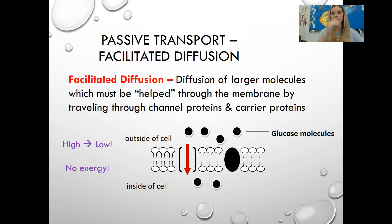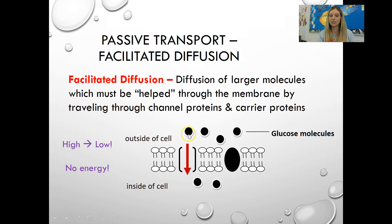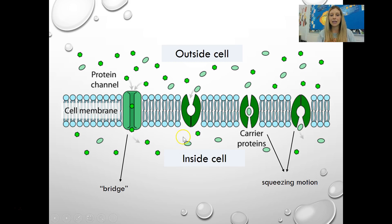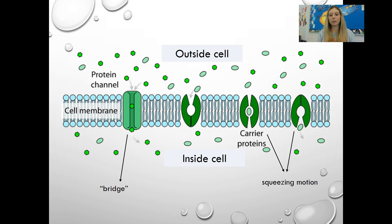Then we have facilitated diffusion, another type of passive transport. It's still diffusion — molecules moving from high to low — but these molecules are a little too large to squeeze through the porous membrane, so they have to be helped or facilitated through the membrane by traveling through channel proteins and carrier proteins. A glucose molecule is a little too big to squeeze through the phospholipids, so it travels through these helper proteins. It still doesn't take any energy because it's traveling from high to low, so it is passive transport.